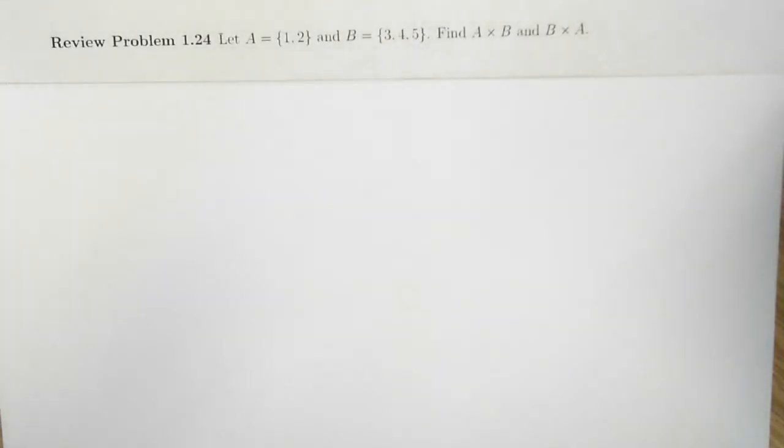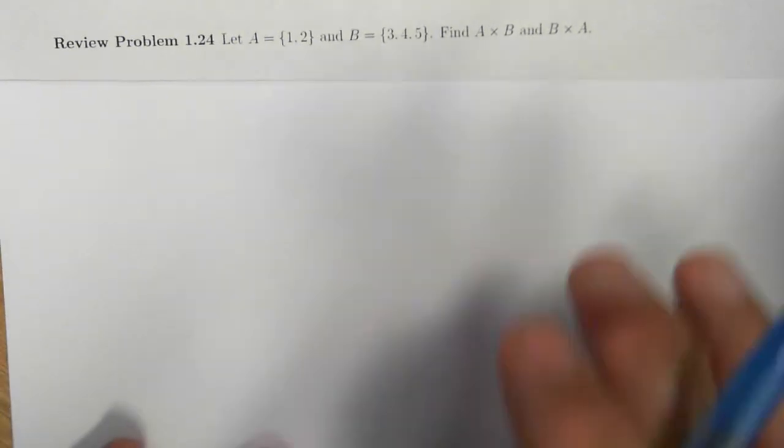In this review problem 1.24, we're going to compute the Cartesian products A times B, or A cross B, and B cross A.